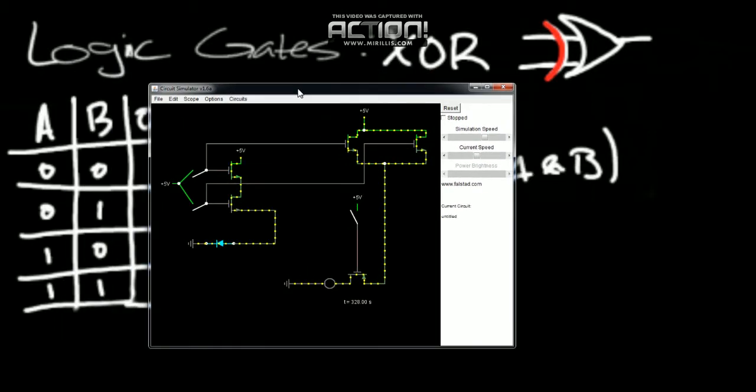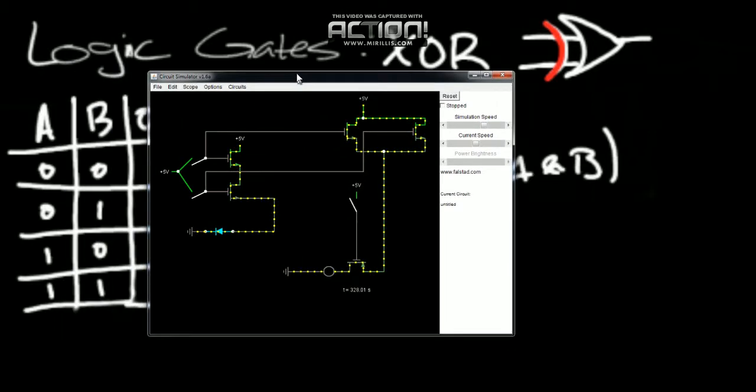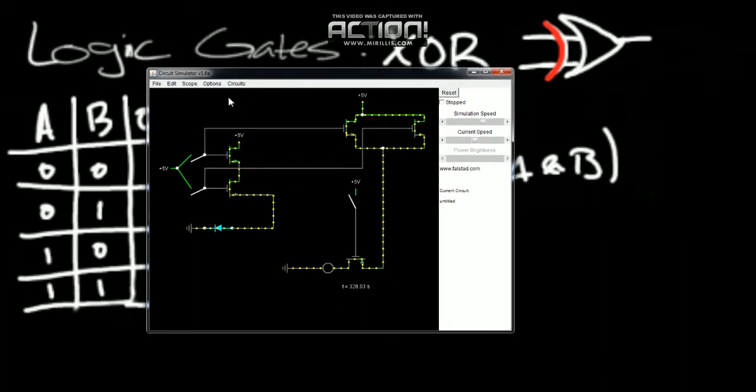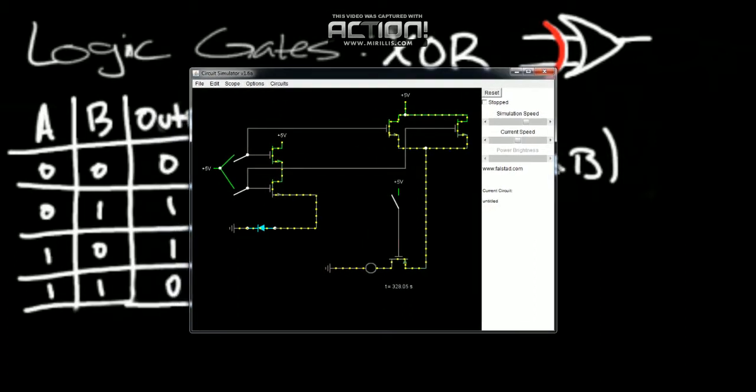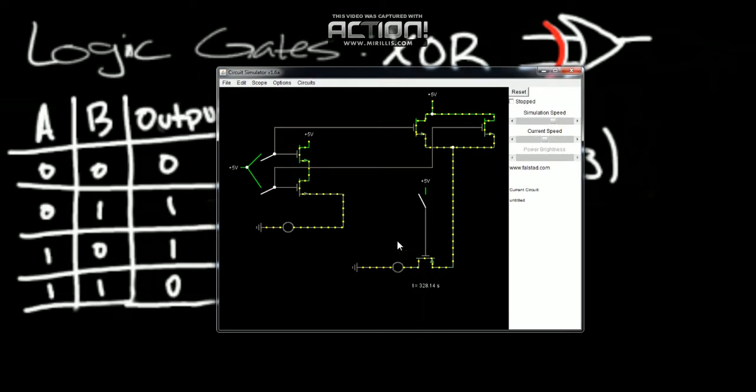So hopefully you guys follow. I'm not really doing anything new here. Let's just start running down through the cases. A and B, both false. This LED is off, so the switch should be off. And our LED over down here, which signifies the XOR gate result, is off. So we're correct.